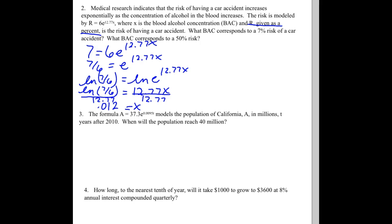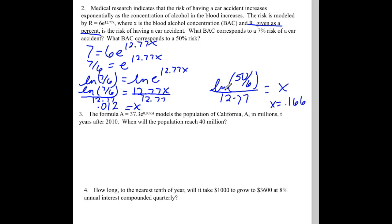Now figure out what x would be for a 50% risk. The only thing that changes is replacing the 7 with a 50. So we need the natural log of 50/6, then divide by 12.77. We get x ≈ 0.166.